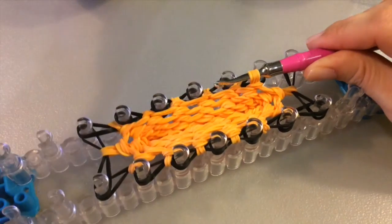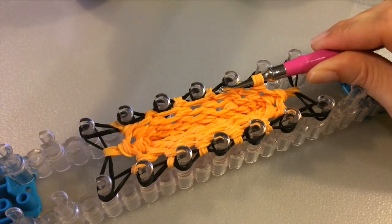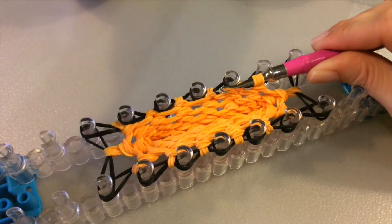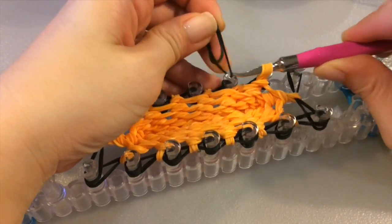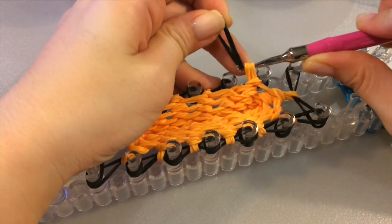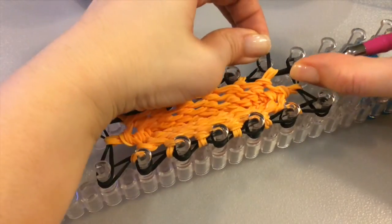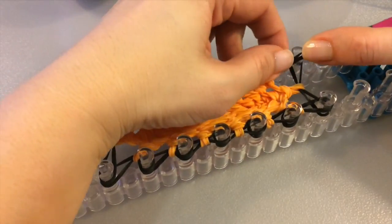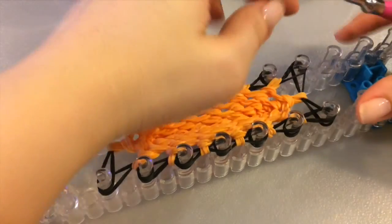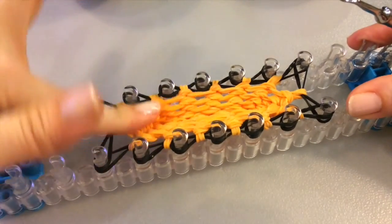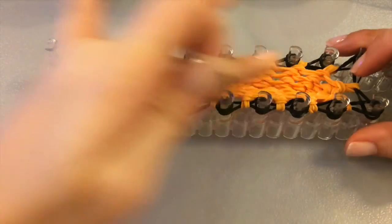So we're now at the last two pegs. Pull those black bands and just flip them onto the last two pegs, pull them through. The next process is just as simple as the first.